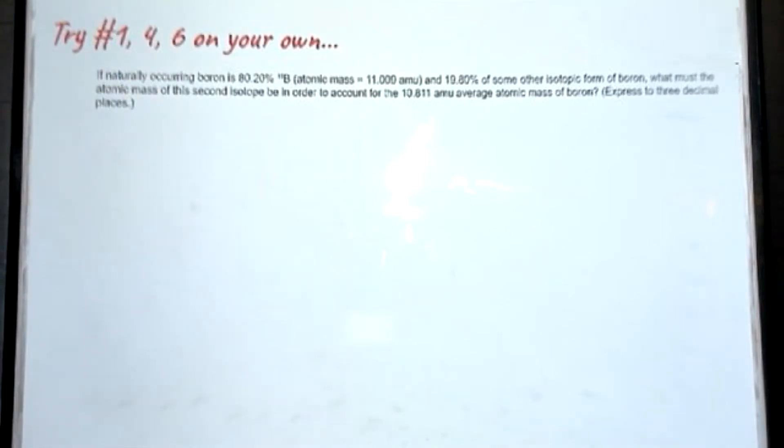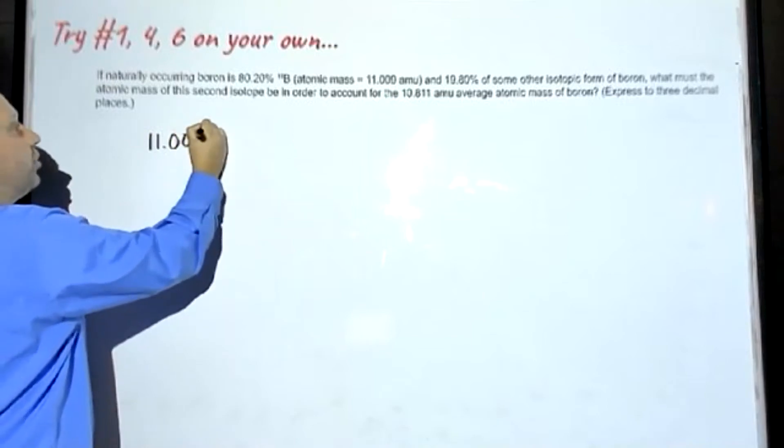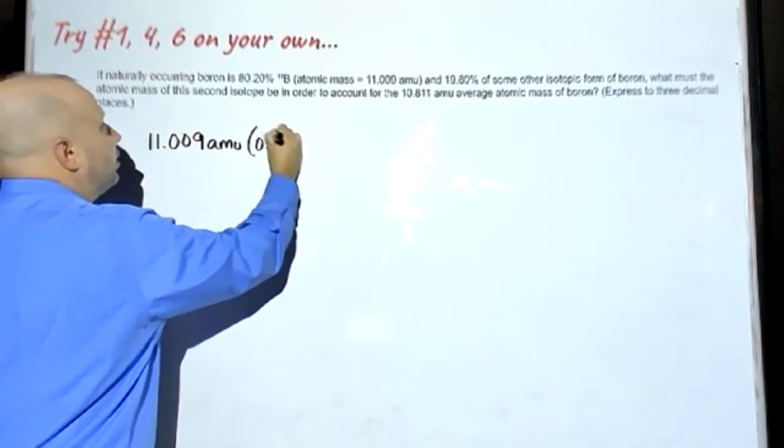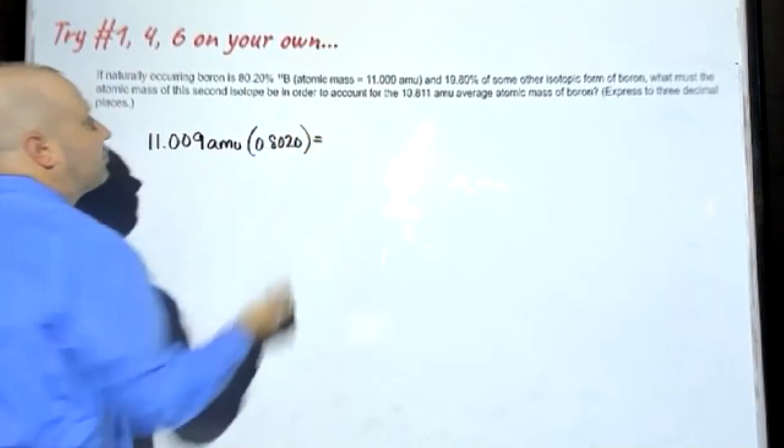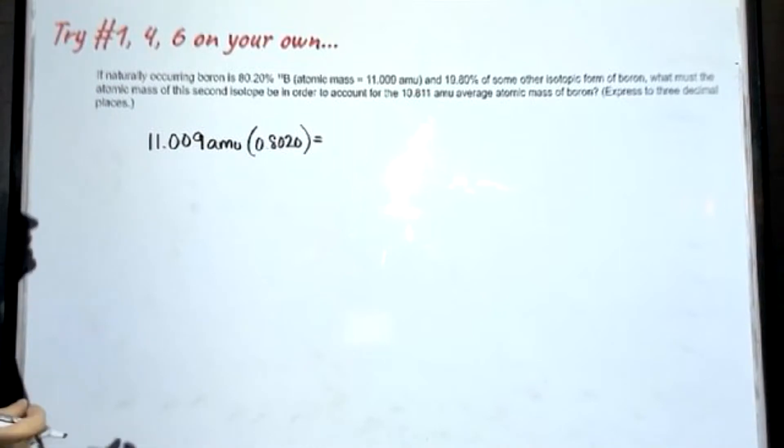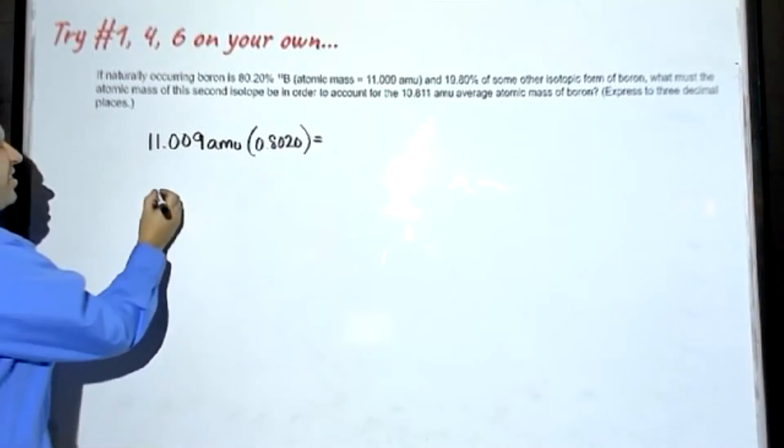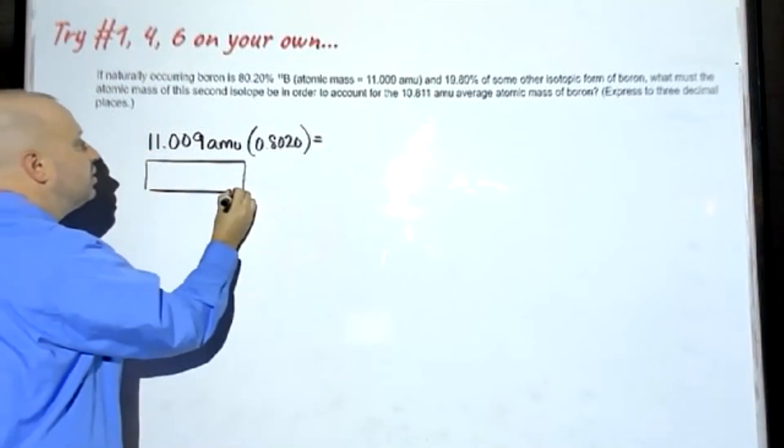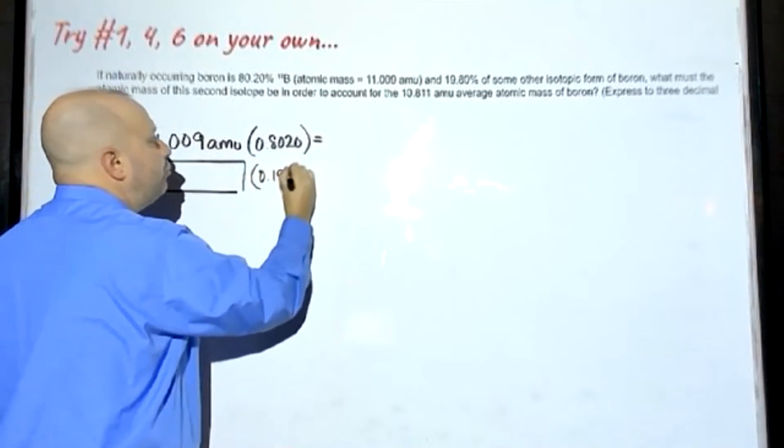If naturally occurring boron is 80.20% with this atomic mass, 11.009 AMU, I'm going to change our percent to a decimal, and 19.80% of some other form.